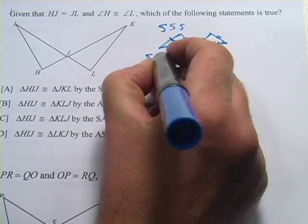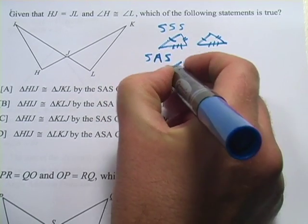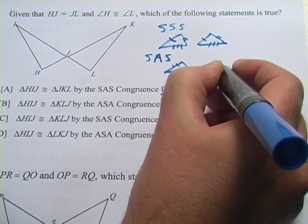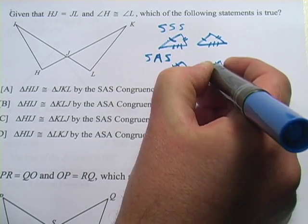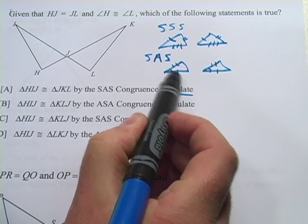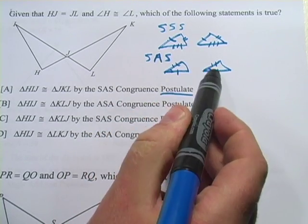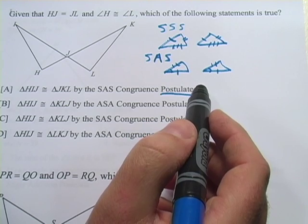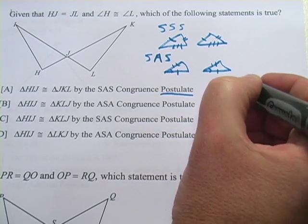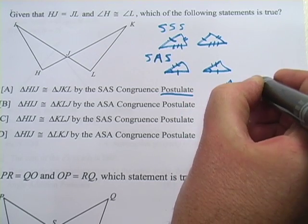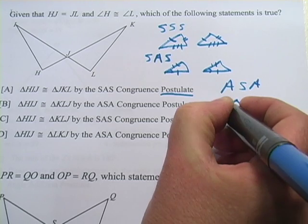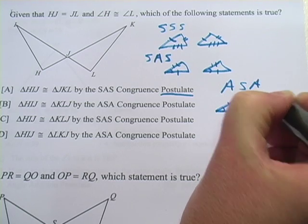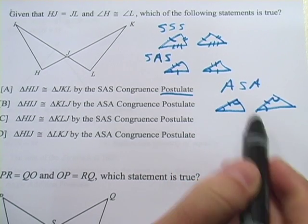There's another one called side-angle-side. What that says is if you have two sides in a triangle that are congruent, and an angle included between the sides — the angle comes right between the two sides, not the other angles — then those triangles are congruent. And one more: we've got the angle-side-angle, which is a lot like the last one except you have two angles and a side in between. If those are all congruent, then the whole triangle is congruent.